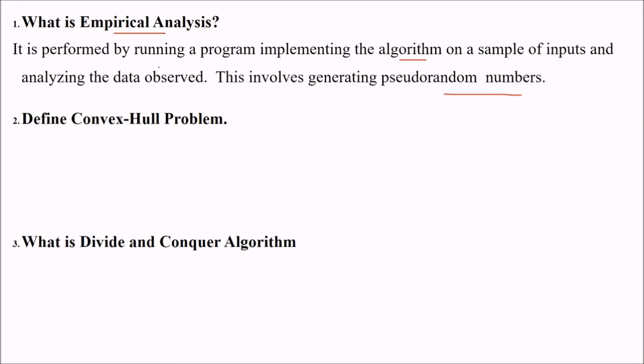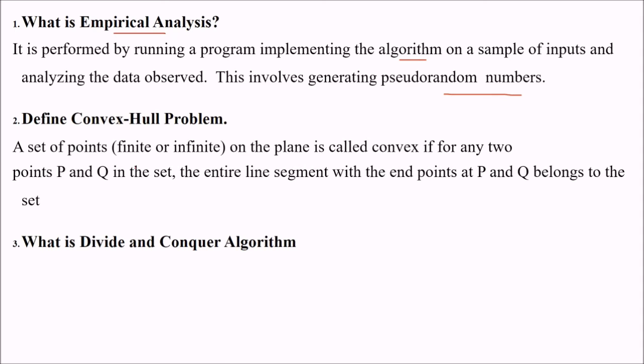Define convex hull problem. We have set of points, they may be finite or infinite in a plane which is called as convex. If for any two points P and Q out of these finite or non-finite set, the entire line segment with the endpoints at P and Q belongs to the set. So if we have this P point, this is Q, you can have any number of points on a plane. Then the entire line segment with the endpoints P and Q, they belong to this set.